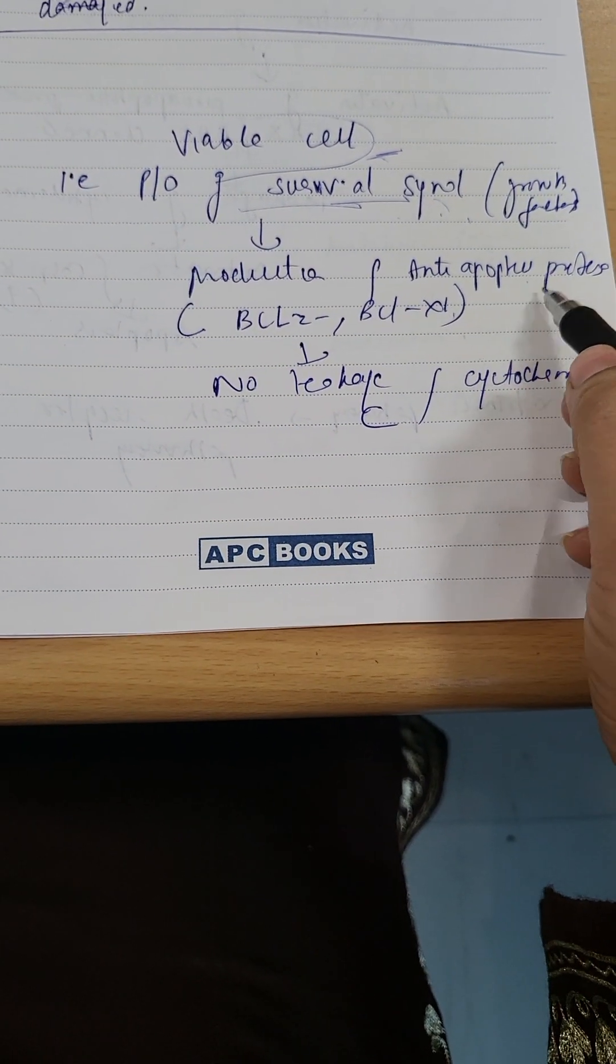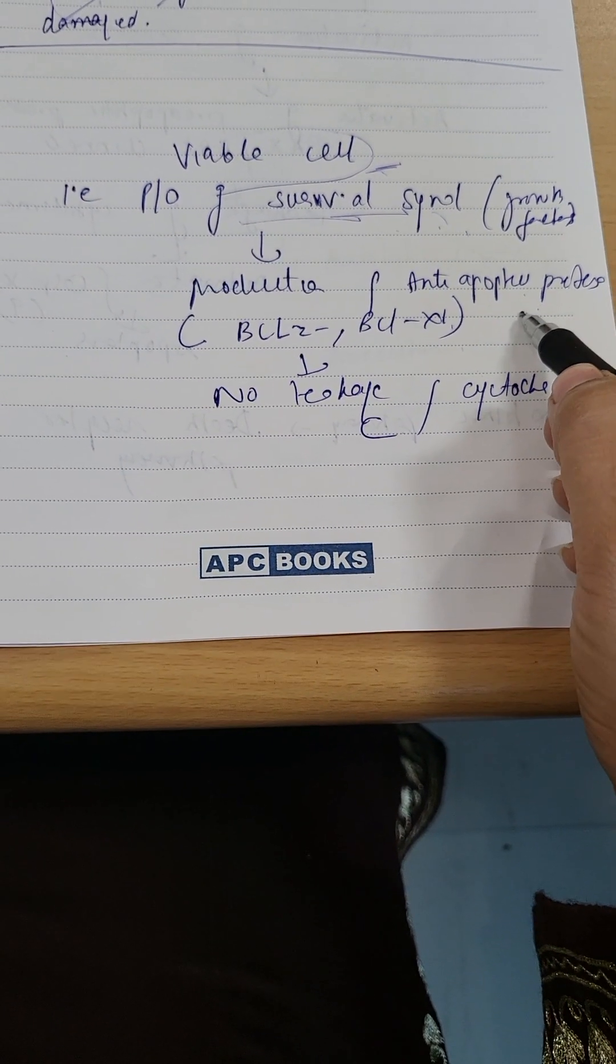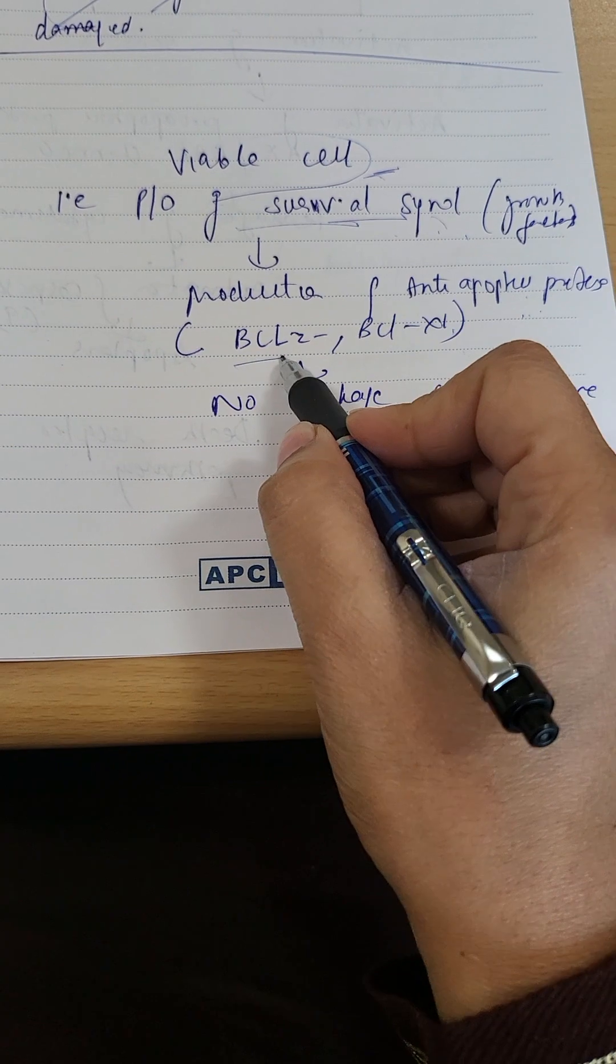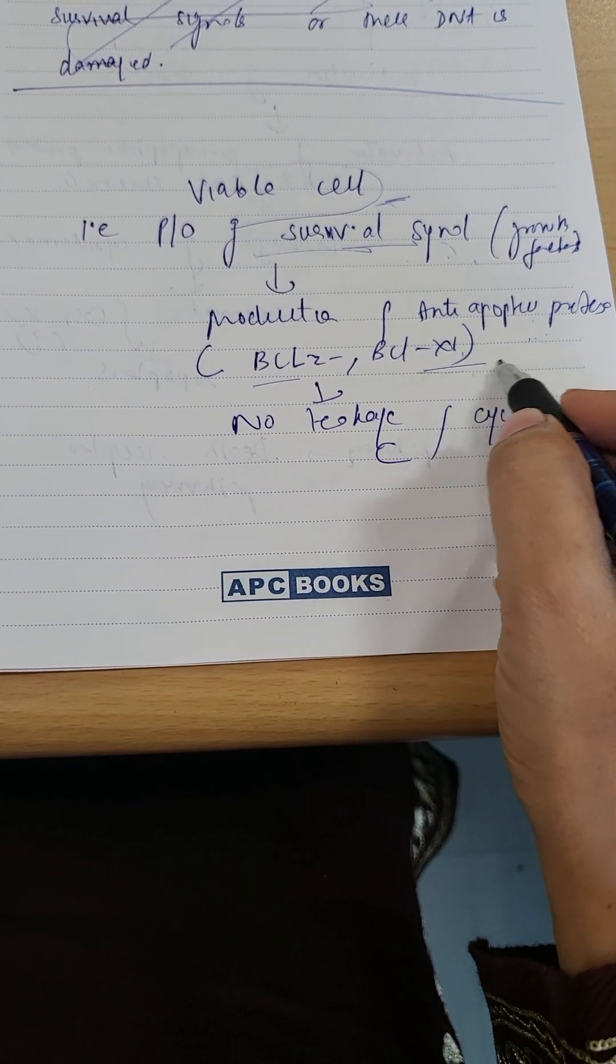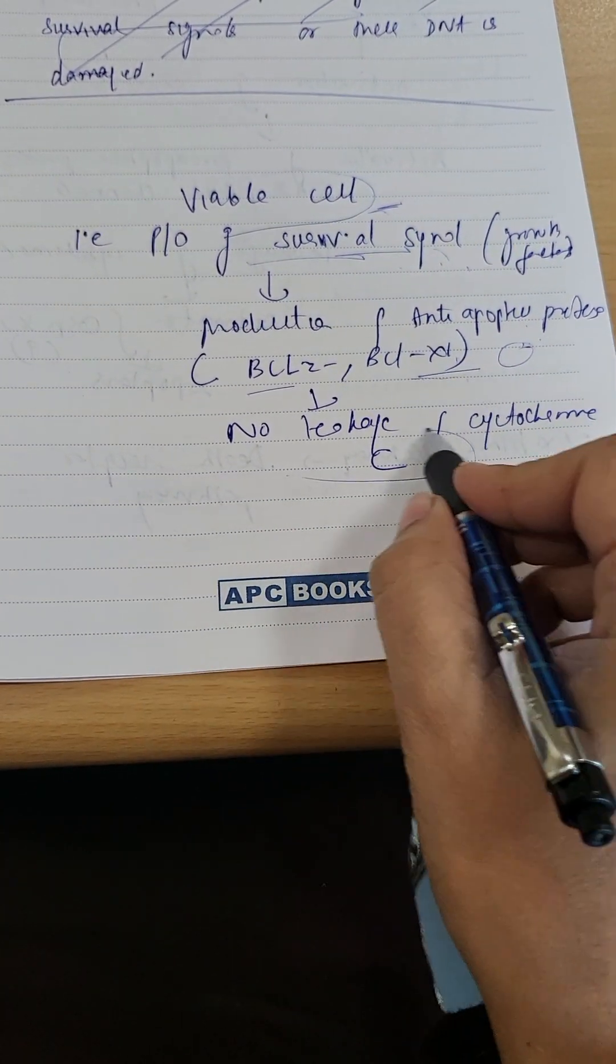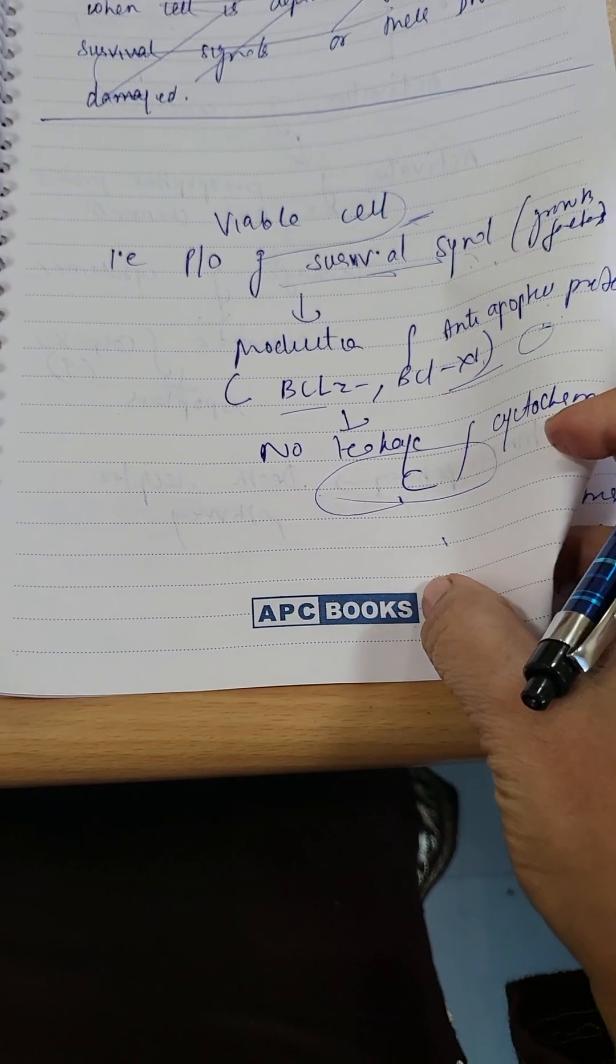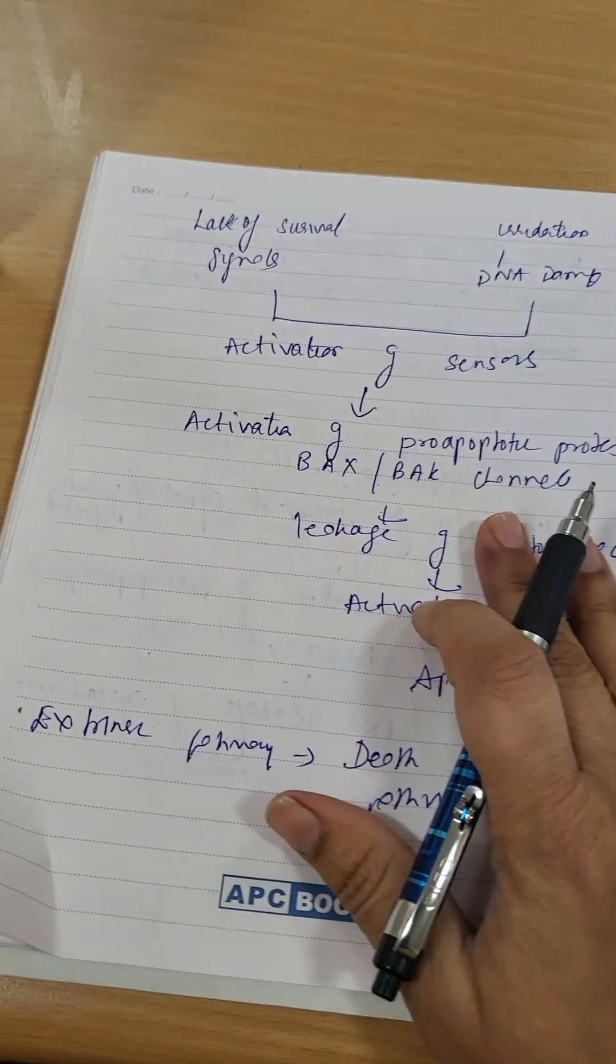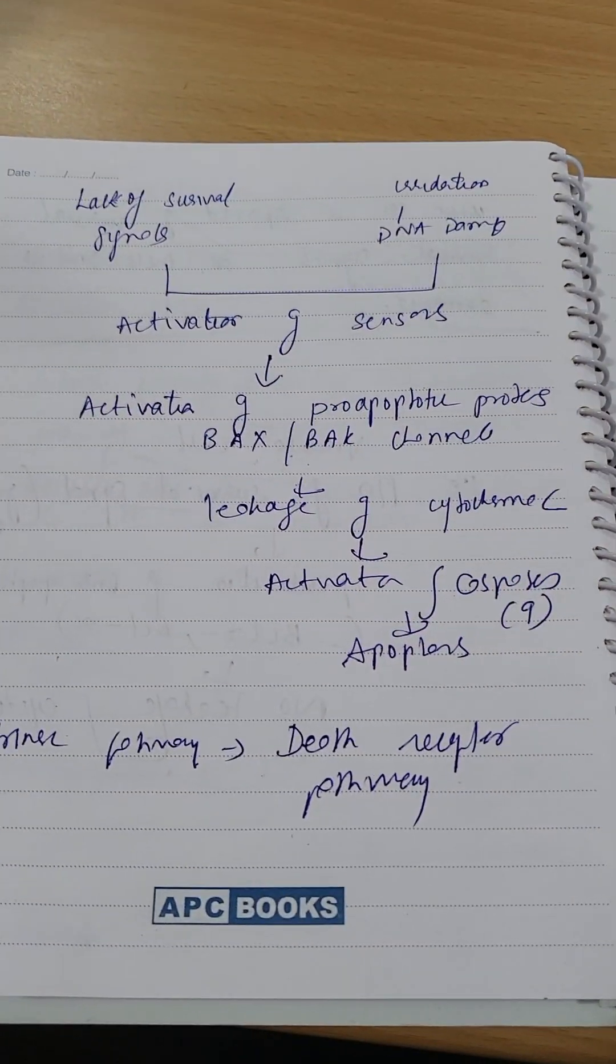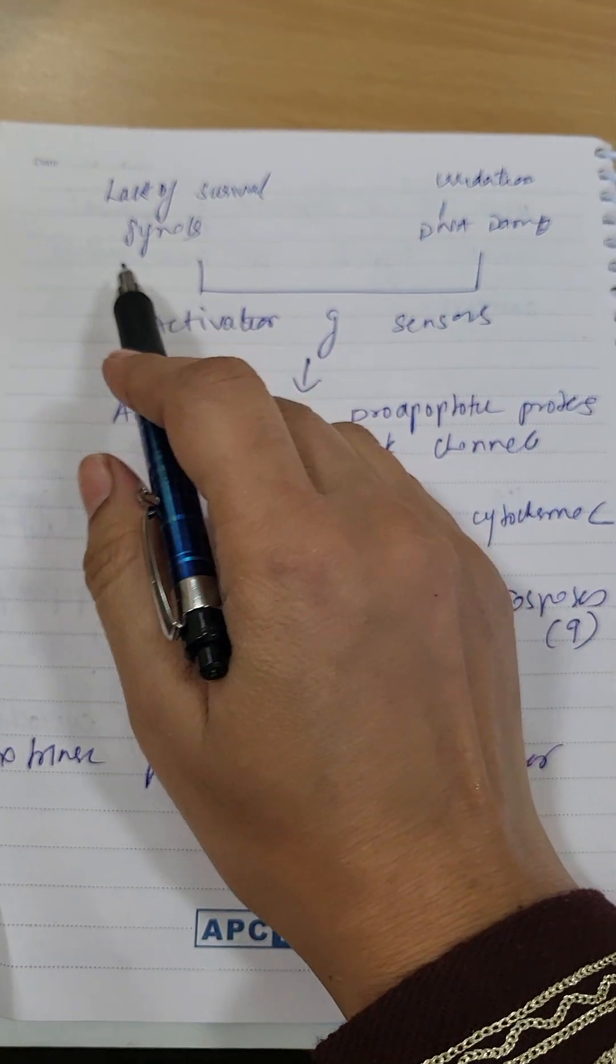There will be production of anti-apoptotic proteins BCL2 and BCLXL. When they are present, there will be no leakage of cytochrome C and no process of apoptosis. This is the condition of a viable cell.